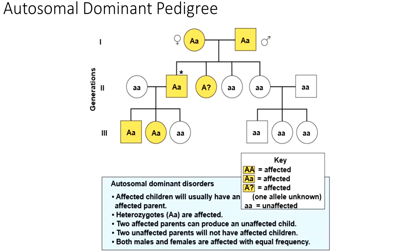Here are a few more facts about autosomal dominant disorders — kind of the opposite of recessive. Usually if a child has it, you probably have a parent that has it as well, and heterozygotes do actually have the disease. But two affected people can still produce an unaffected child: if two heterozygotes get together, a quarter of their children will end up with two small A's and not be affected, because it's the big A that causes the disorder in this case. Males and females are equally affected because it is autosomal.